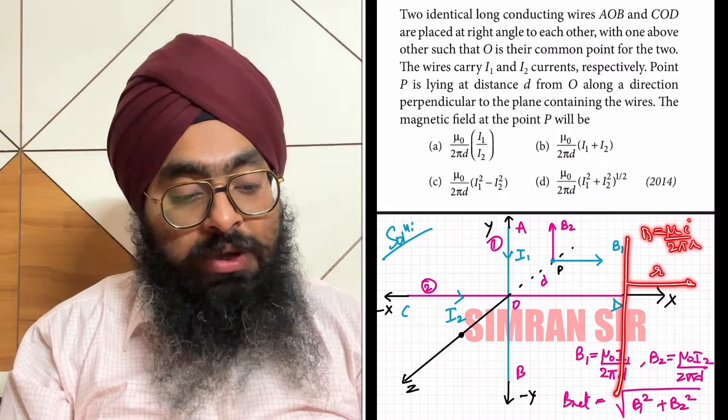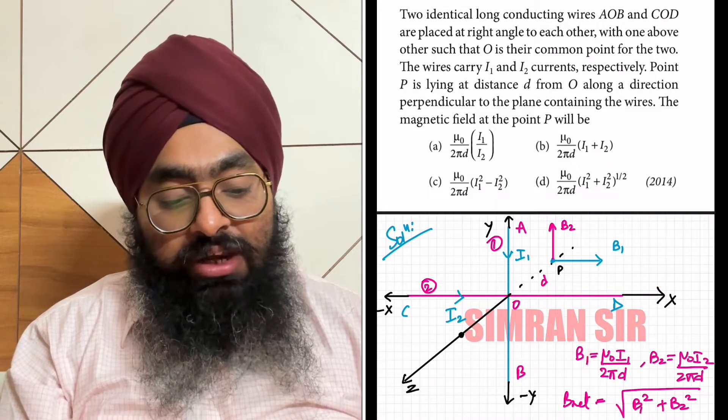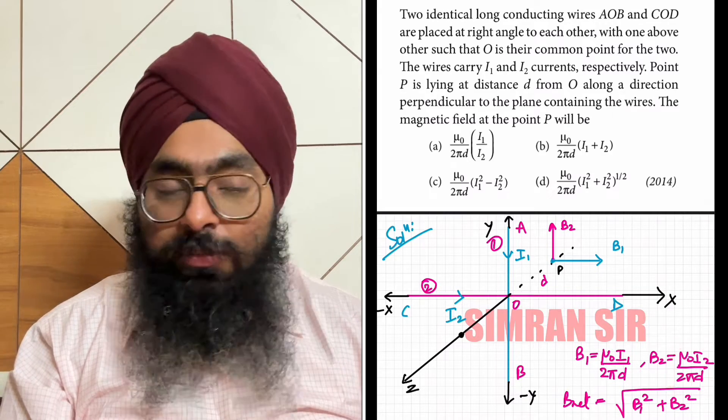So the magnetic field from the first wire is B1 = mu_0*i1/(2*pi*d), and from the second wire is B2 = mu_0*i2/(2*pi*d).